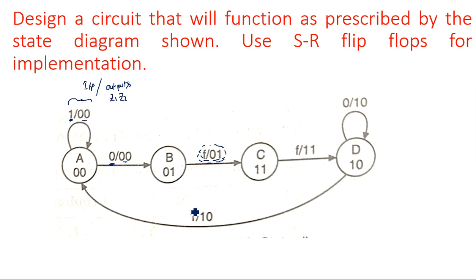This is the state diagram given to us. What type of circuit is it — Mealy or Moore? Moore depends only on the present state, but Mealy depends on both the present inputs and present state. So this is a Mealy circuit.